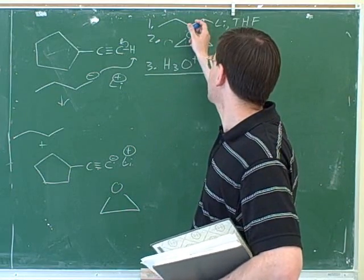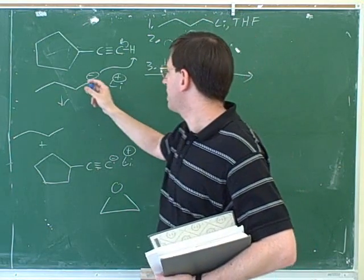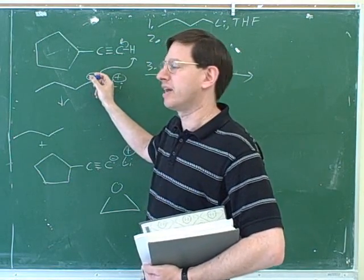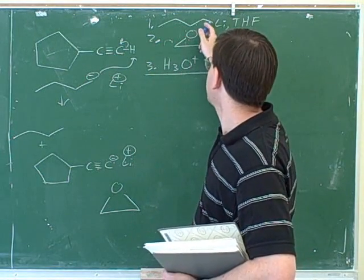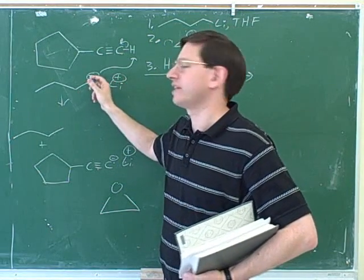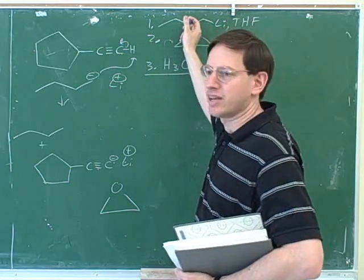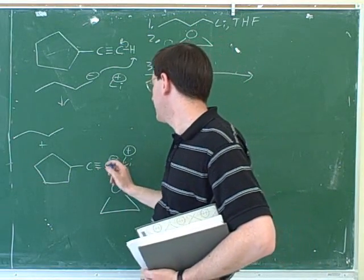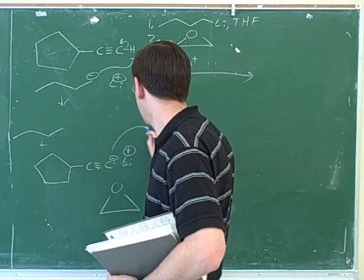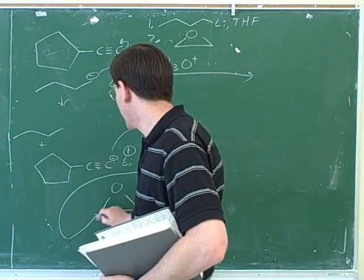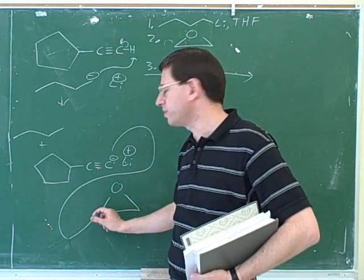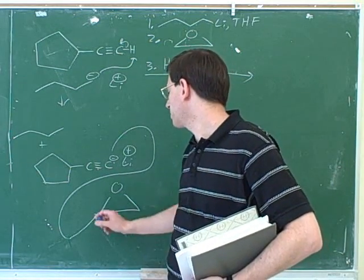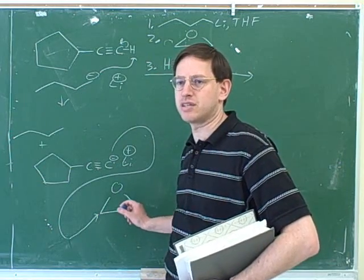When working with alkyllithiums, the best thing is to redraw them as ionic bonds. So we redraw the alkyllithium here as an ionic bond. Make sure you first erase the covalent bond and then put in the charges so you don't accidentally add a carbon — this has four carbons, and this has four carbons. Now, this would tend to be at the tail, and the head goes here. This is a reasonable electrophile because it's delta positive.